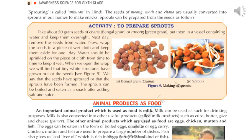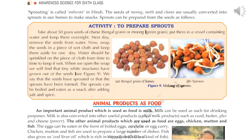Other animal products which are used as food are eggs, chicken, mutton, and fish. Fish also gives us cod liver oil, which is rich in vitamin A. This cod liver oil is obtained from a kind of fish called cod.